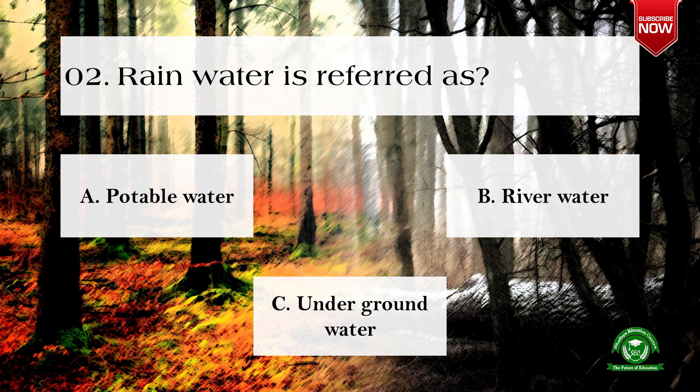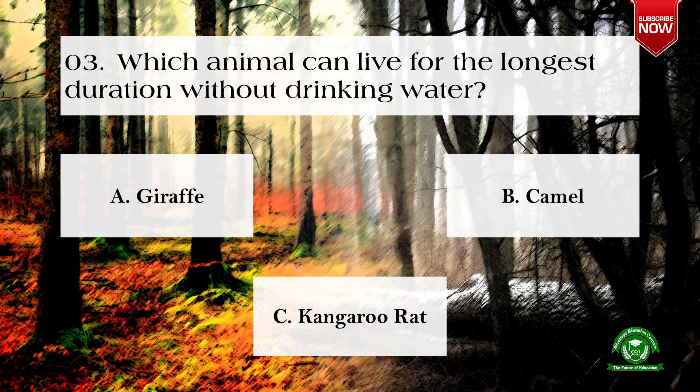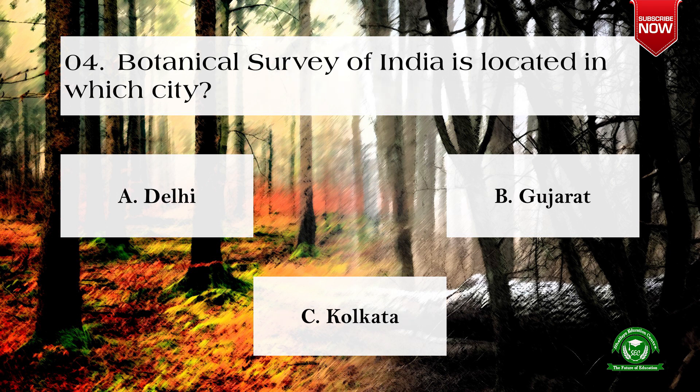Next question: rainwater is referred to as — options are: a) potable water, b) river water, c) underground water. The correct option is c) underground water. Next question: which animal can live for the longest duration without drinking water? Options are: giraffe, camel, and kangaroo rat. The right option is c) kangaroo rat.